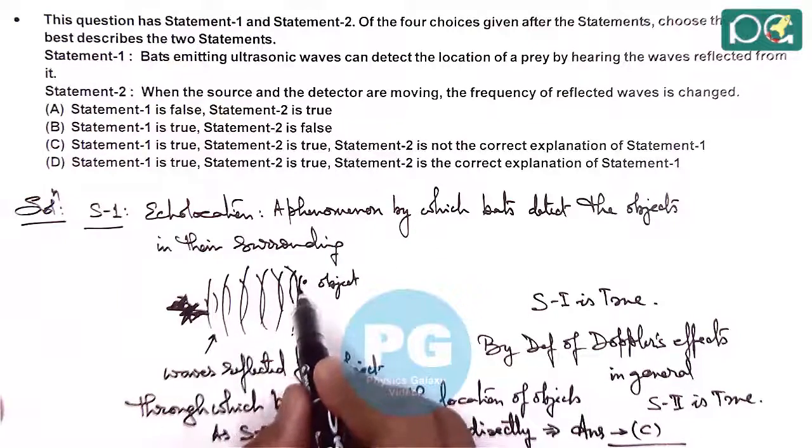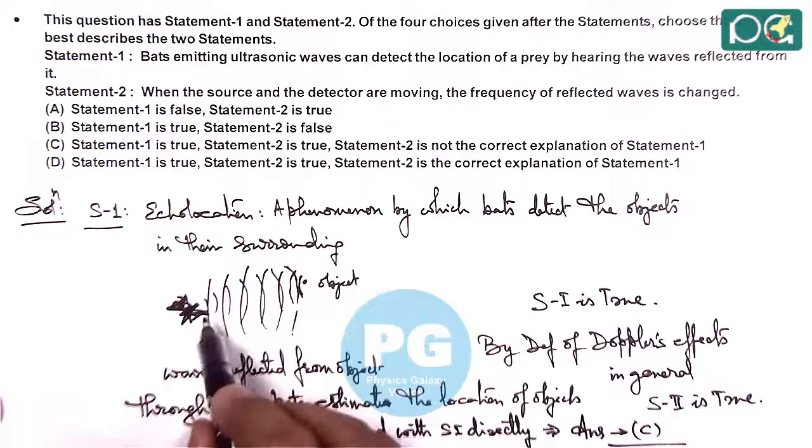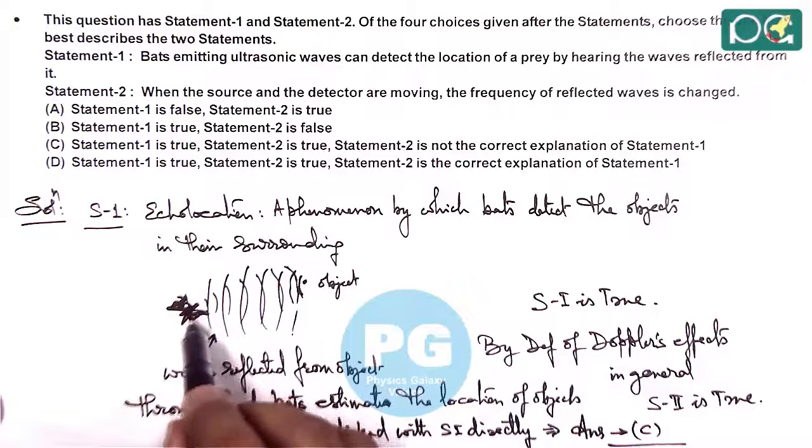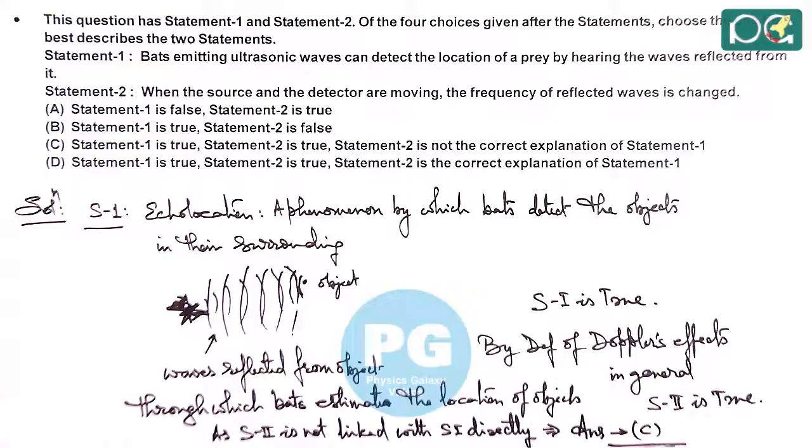Because the explanation of statement one is basically the reflected wave by which some intensity is received back by the bat, so it is able to detect the location of the object. The answer to this question is option C.